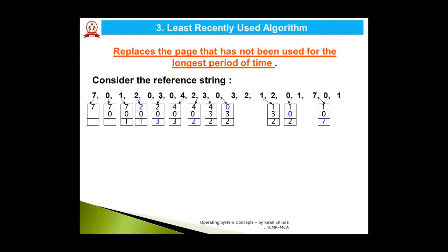The LRU algorithm replaces the page that has not been used for the longest period of time in the past. The key difference from Optimal page replacement is that LRU uses past knowledge, while Optimal uses future knowledge. Using the same reference string, the first three pages 7, 0, 1 are loaded into the three frames. For page 2, we need to find the victim from {7, 0, 1}.